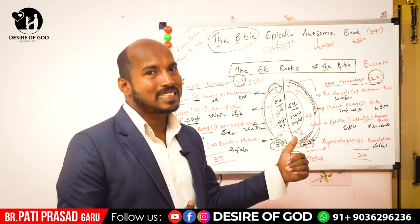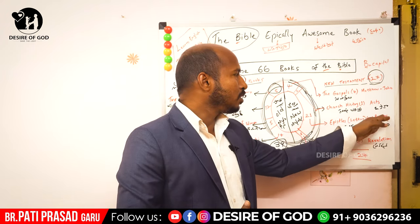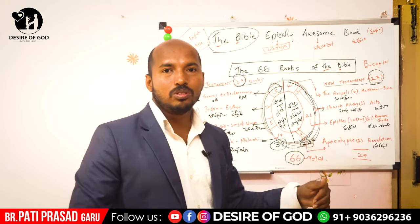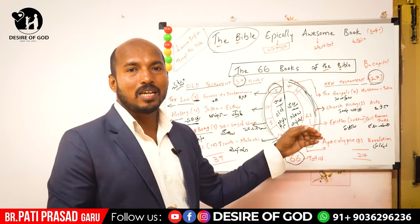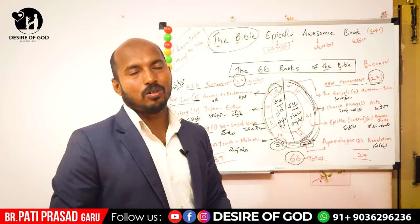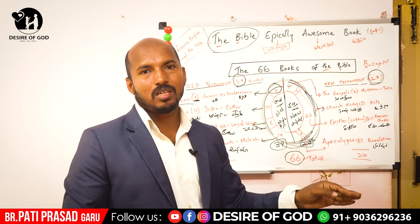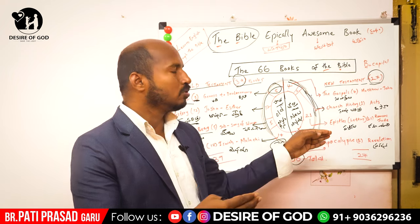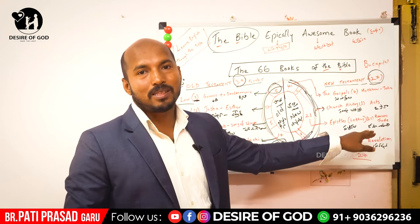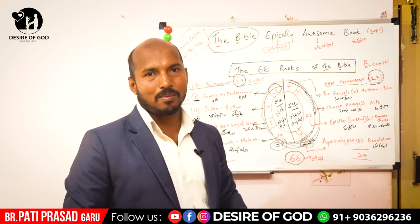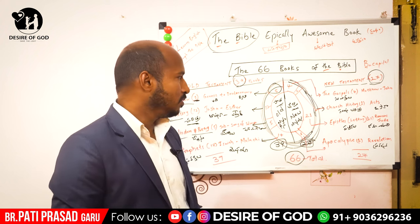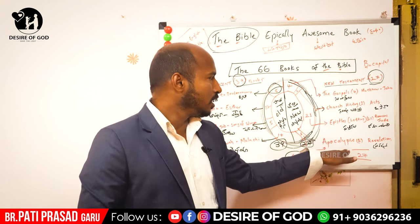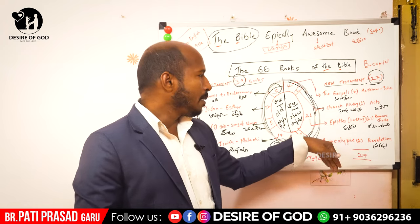The next category is the Epistles — Letters. It starts from Romans and goes all the way to Jude. The last category is Revelation, the Apocalypse.